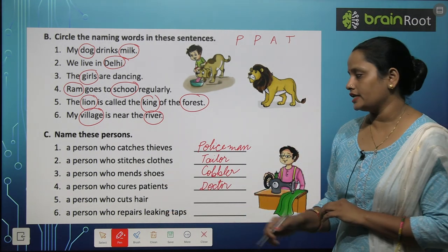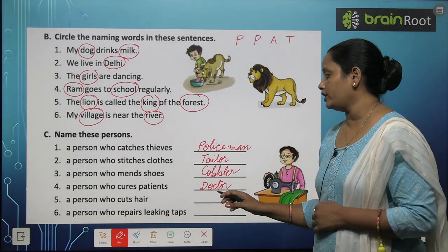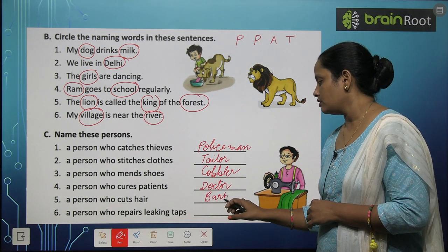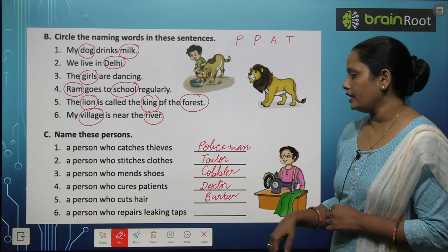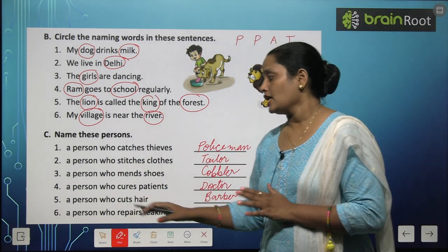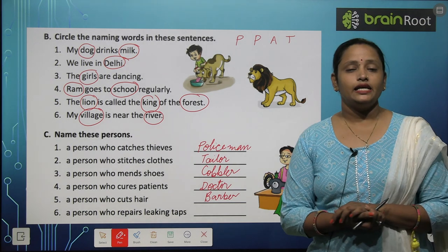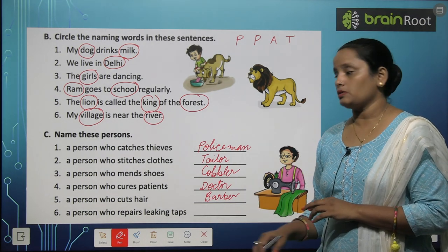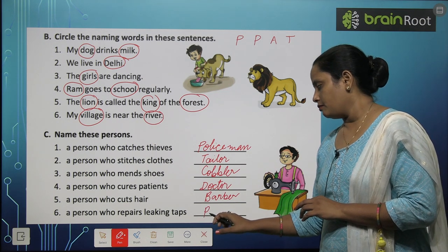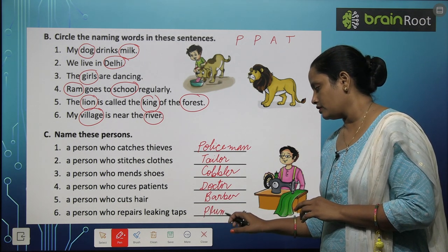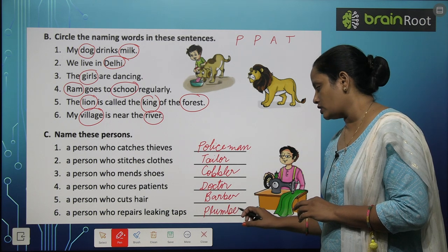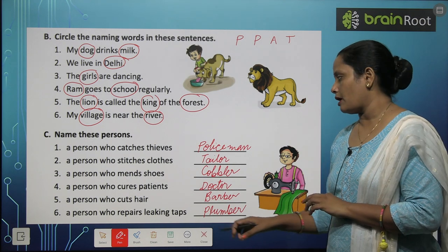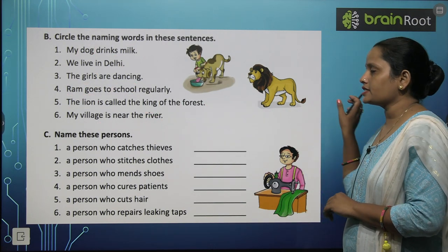A person who cuts hair — barber. A person who repairs leaking taps — aapke ghar mein agar nal kabhi kharab ho jaye toh kise bulaaate hain? Plumber. Toh jo nalon ko theek karta hai use kehte hain plumber. So I hope children, samajh mein aa gaya hoga aapko yeh saari exercises.